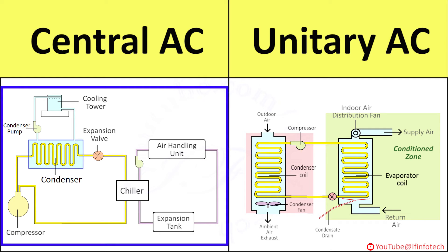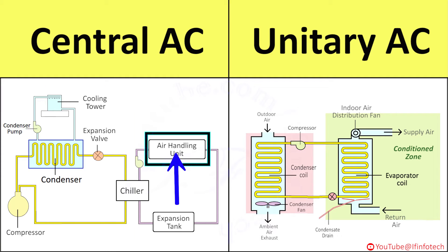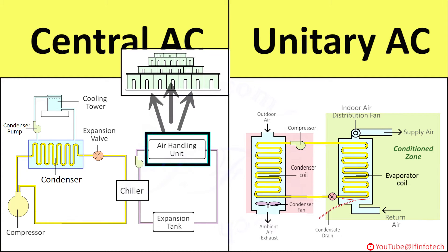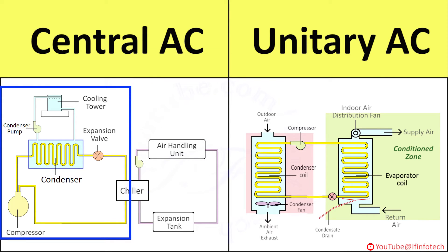We start with Central AC. In Central AC, all components are grouped together at a central control room where air is processed and distributed through ducts to various rooms in buildings. All rooms in buildings are air conditioned by the central air conditioning plant. The control room may be located in the basement of the building. Central AC is generally used for capacity more than 40 tons of refrigeration.